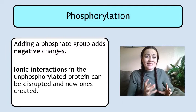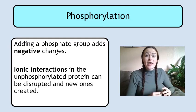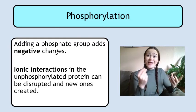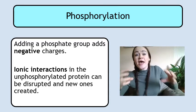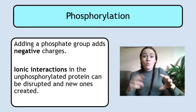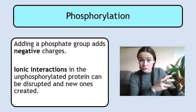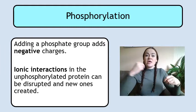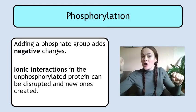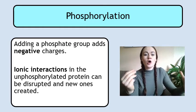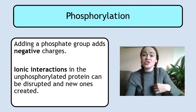When a phosphate gets added to the protein, it adds a negative charge, which will alter and disrupt many ionic interactions in the protein. Any ionic interactions between the R groups of the amino acids are affected. It might make one end of the protein more negative, strongly attracting a positive end, or it might make a previously positive end negative so it's repelled from another end. This creates new ionic interactions and disrupts existing ones, changing the overall conformational shape of the protein.